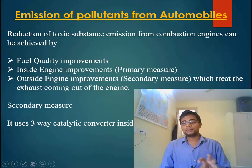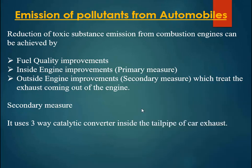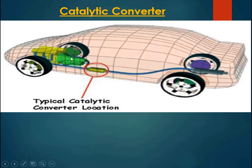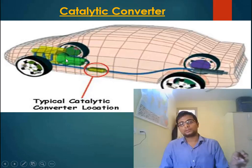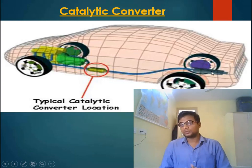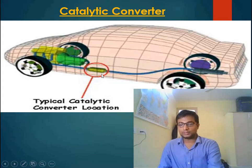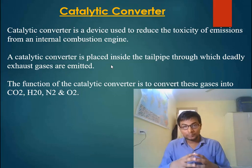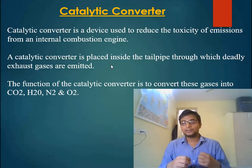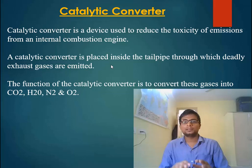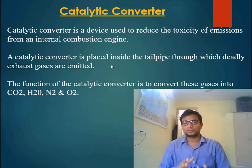The secondary measure uses different types of catalytic converters inside the tailpipe of a car's exhaust. Basically, whenever an engine emits pollutants from its exhaust, there will be a catalytic converter which converts the pollutants into less harmful gases. Let us first discuss about the catalytic converter because some of the quality parameters exist specifically to improve the performance of the catalytic converter — that will become clear as we complete this discussion.